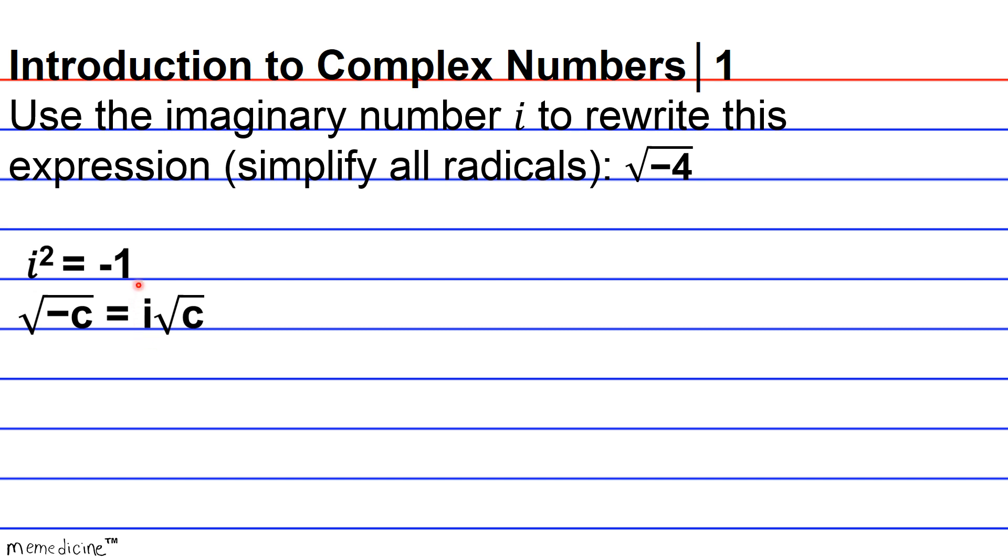And in case you're confused about that theoretical statement, basically what I'm trying to say is that i is equivalent to the square root of negative 1. And if you square i, you're going to get this negative 1.